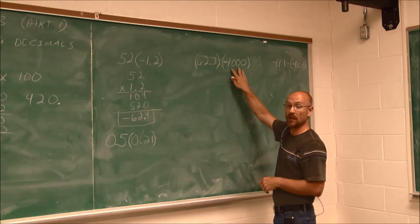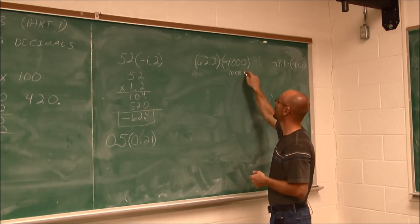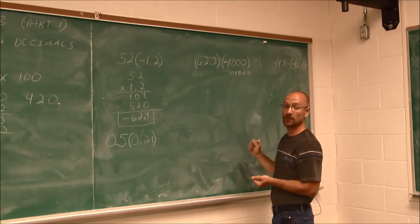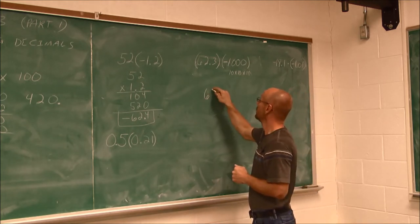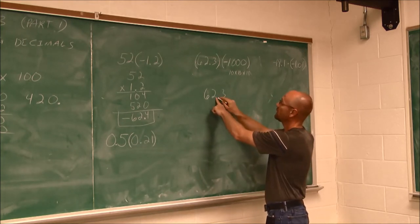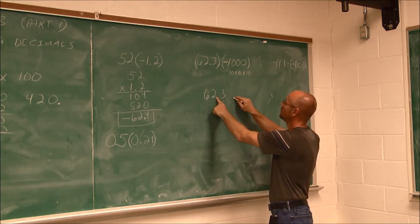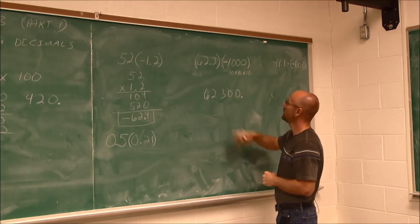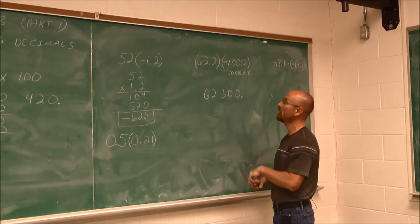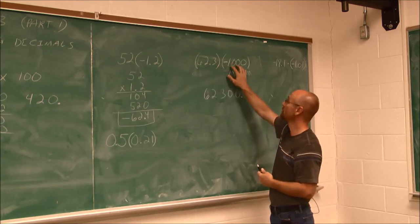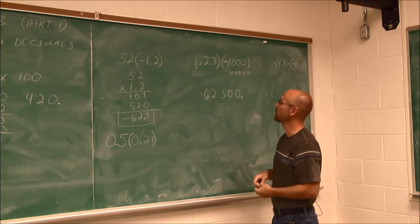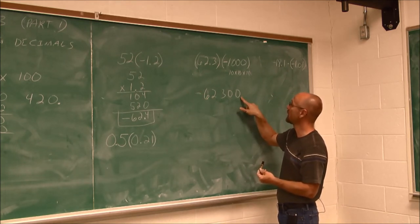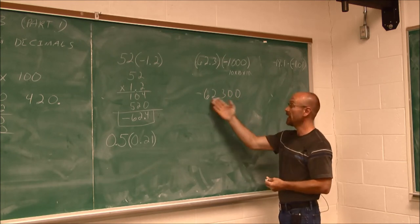Next, we multiply by 1,000, which equals 10 times 10 times 10 — three factors of 10, meaning three zeros. Using the shortcut on 62.3, I move the decimal three spots to the right and add placeholders, giving 62,300. Now assessing the sign: the original problem has a positive times a negative, which is a negative value. So the answer is negative 62,300. Since there are no values to the right of the decimal, it's not necessary to include it.